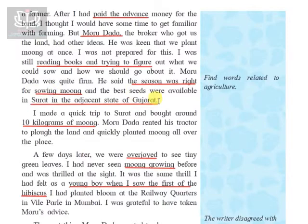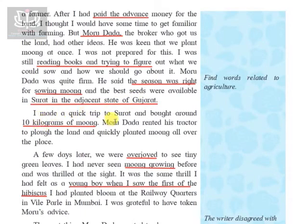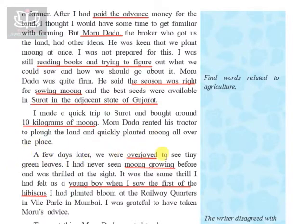Morudada was quite firm — he said the season was right for sowing moong and the best seeds were available in Surat, in the adjacent state of Gujarat. The writer made a quick trip to Surat and bought around 10 kilograms of moong. Morudada returned with his tractor to plow the land quickly and planted moong all over the place. A few days later, they were overjoyed to see tiny green leaves.